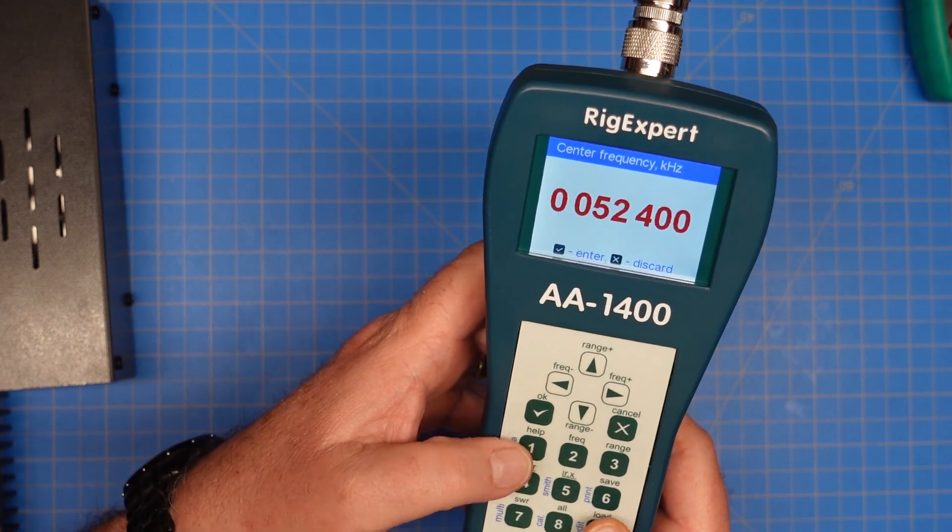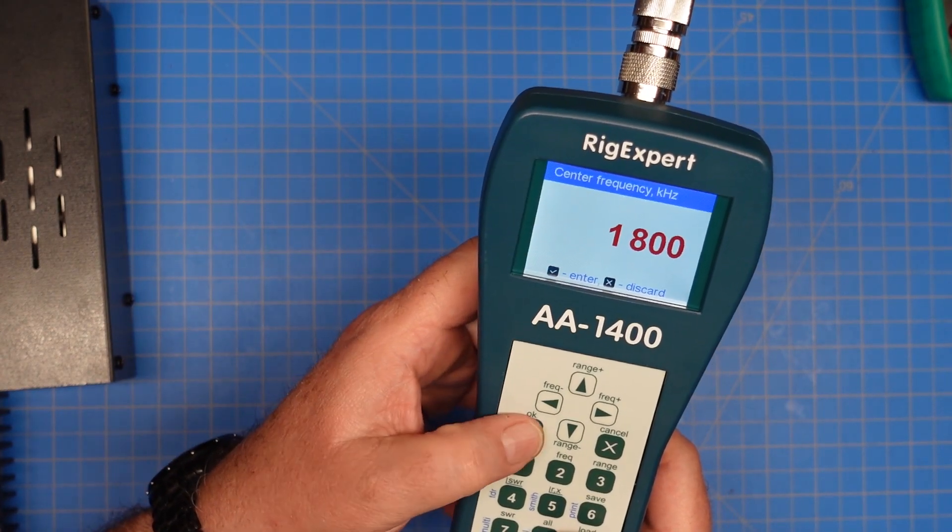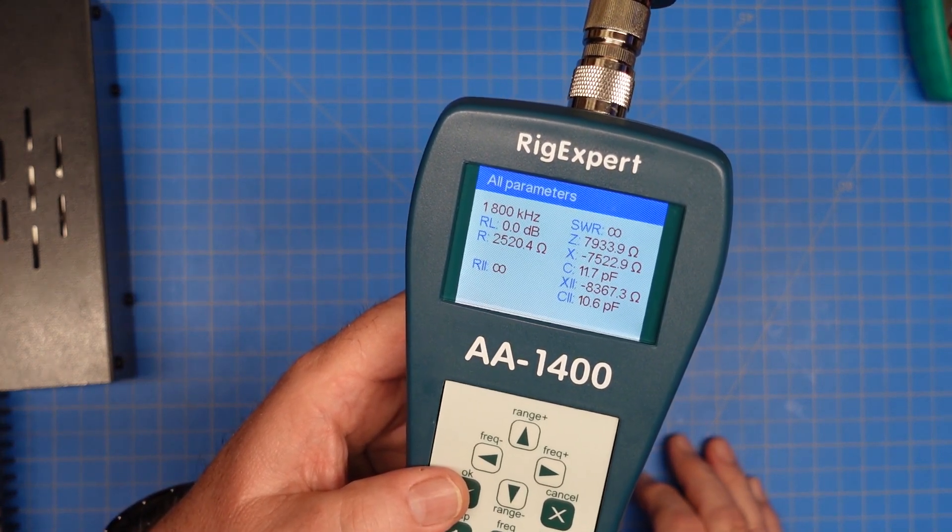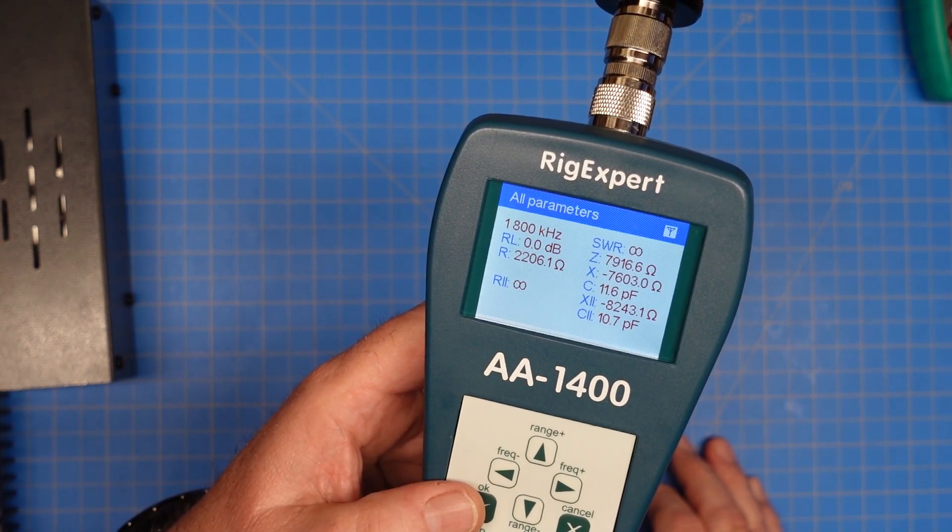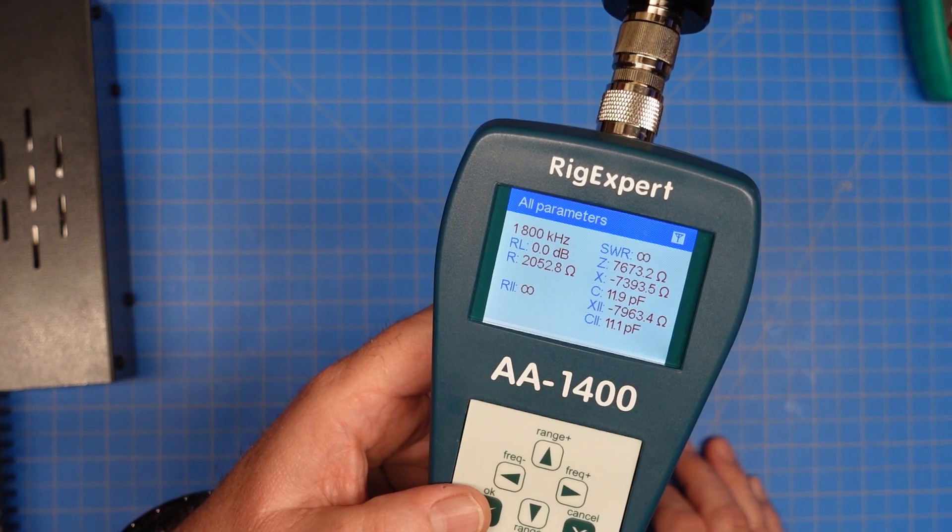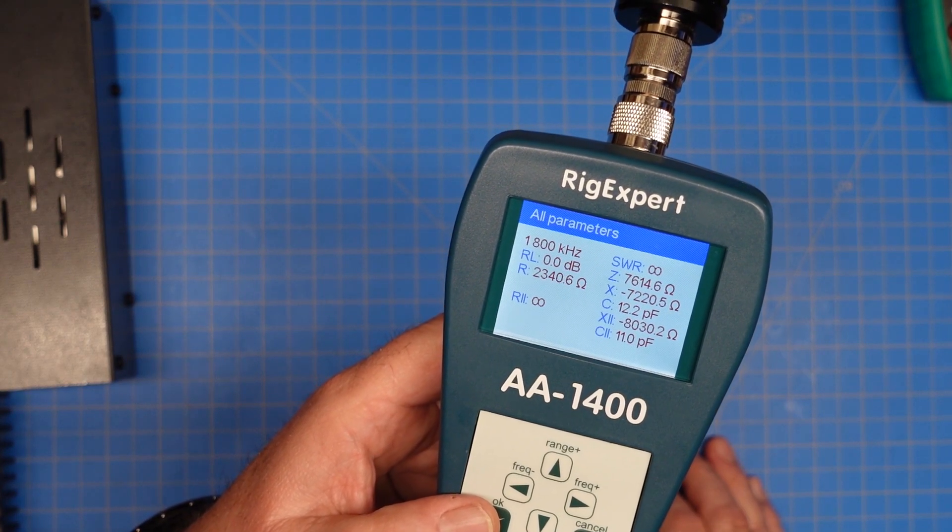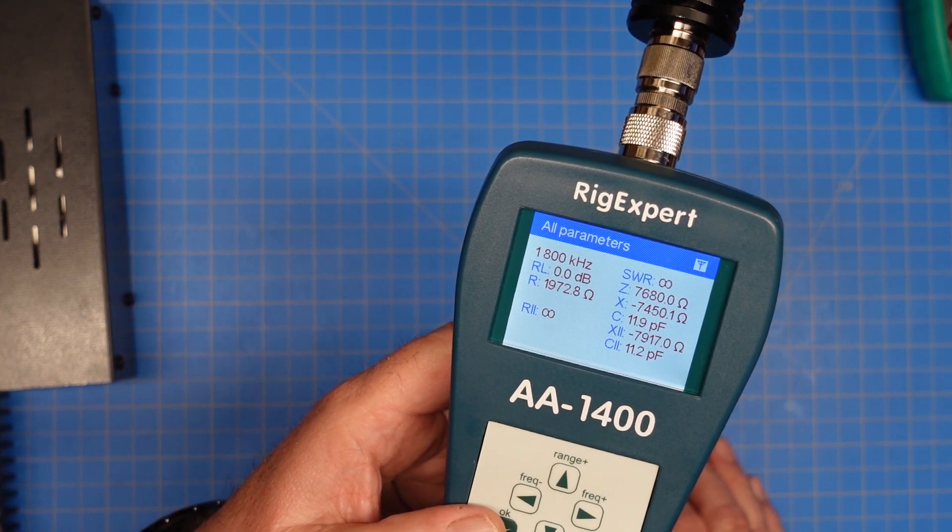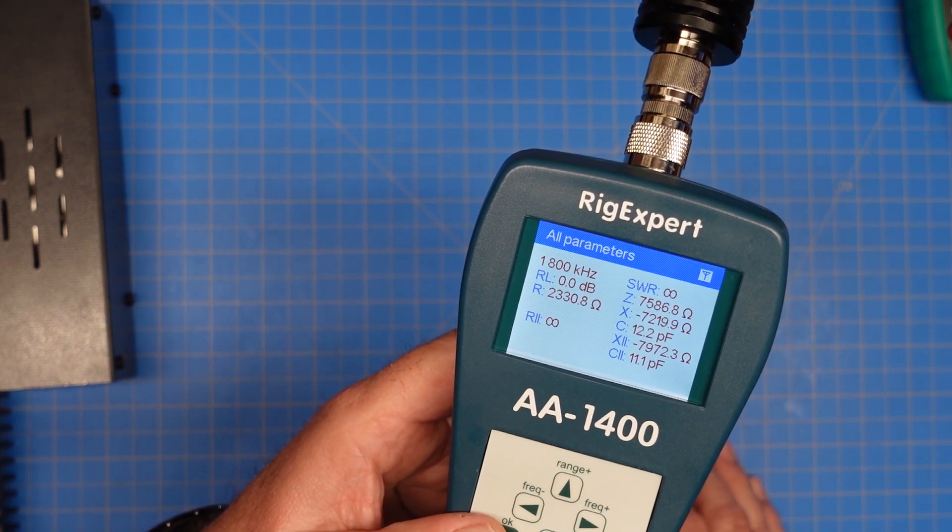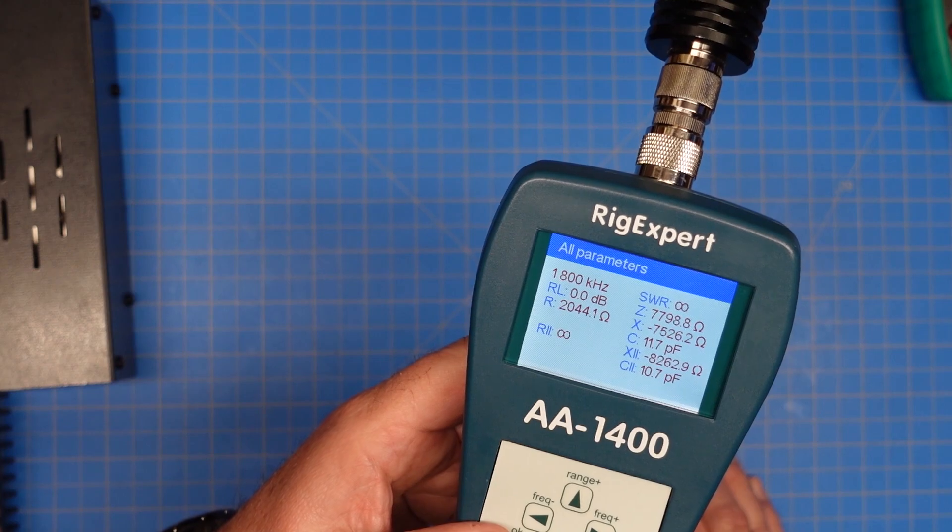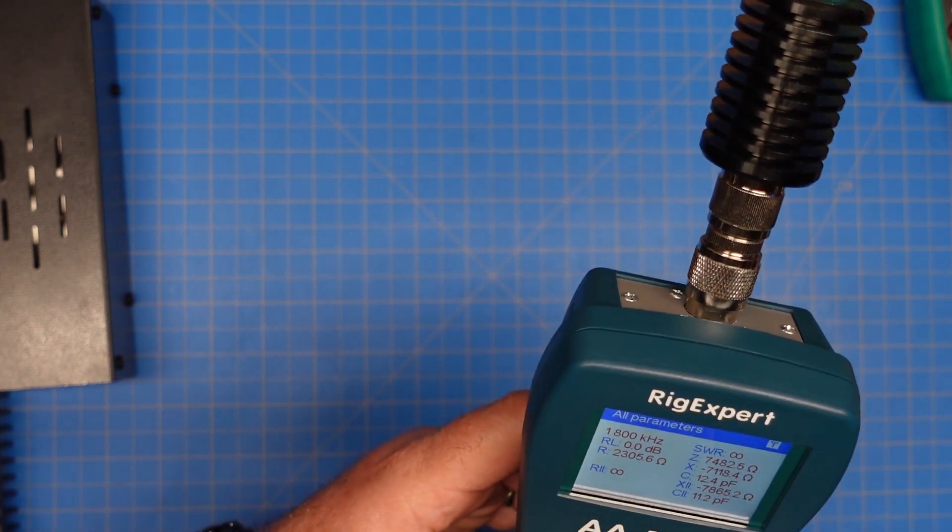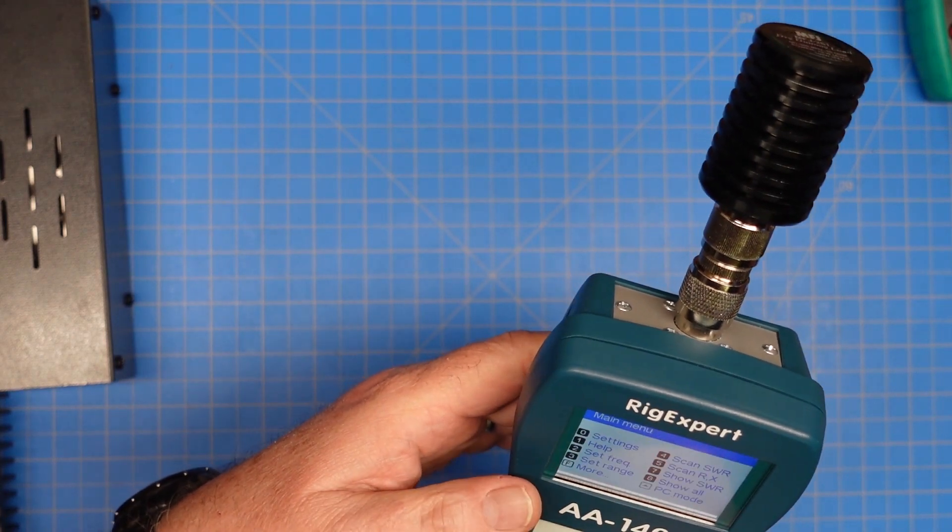Let's jump down to 160 meters and see what it looks like. And it's even worse. Almost 8,000 ohms of impedance, and showing a resistance of 2,000 to 2,400 ohms. So that is not the values we expect out of this dummy load. So I don't like those at all. Those are no good.